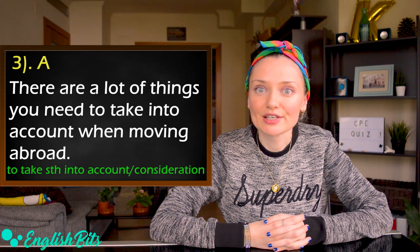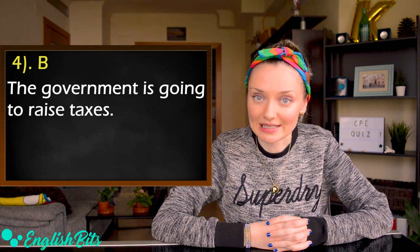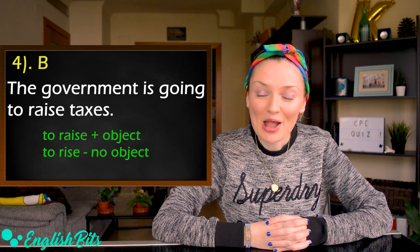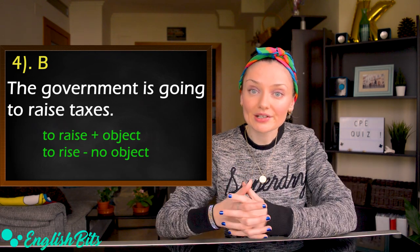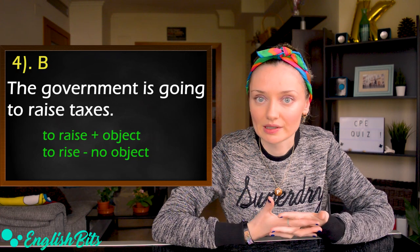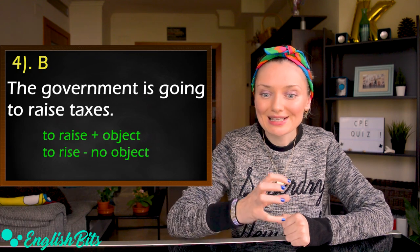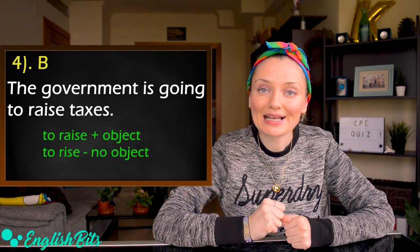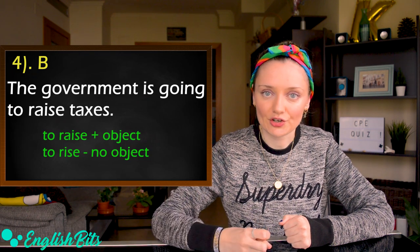Number four — the correct answer is B: to raise. The government is going to raise taxes. We use 'raise' here and not 'rise' because 'raise' is a transitive verb, which means it requires a direct object — you raise a child, you raise your hand or your voice. The verb 'rise' is intransitive, meaning you don't need an object after it. For example: the sun rises in the east.